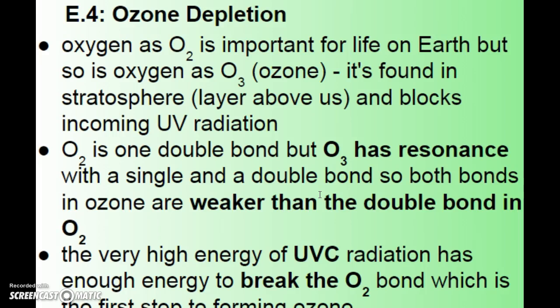Oxygen in the form of O2 is very important down here in the troposphere where we live. But ozone, O3, is also very important — it's found in the stratosphere above us naturally. When it's found down here in the troposphere, if you've ever smelled bumper cars or felt like you can smell rain or lightning in the air, that's actually ozone you're smelling. In the troposphere it's considered a pollutant because it irritates our respiratory system.